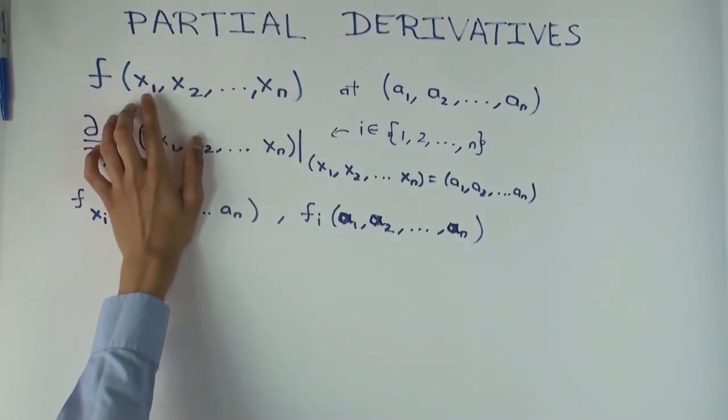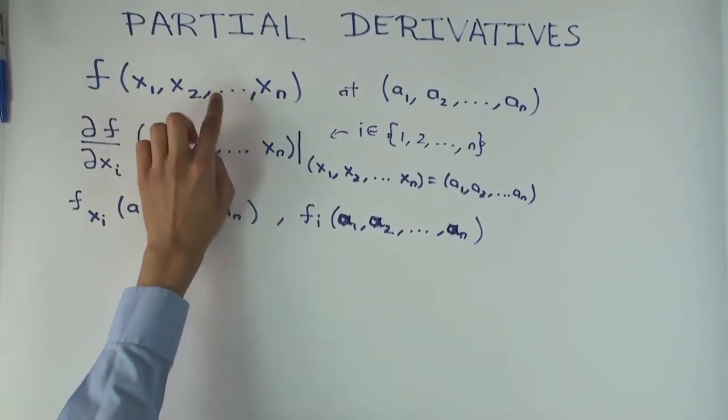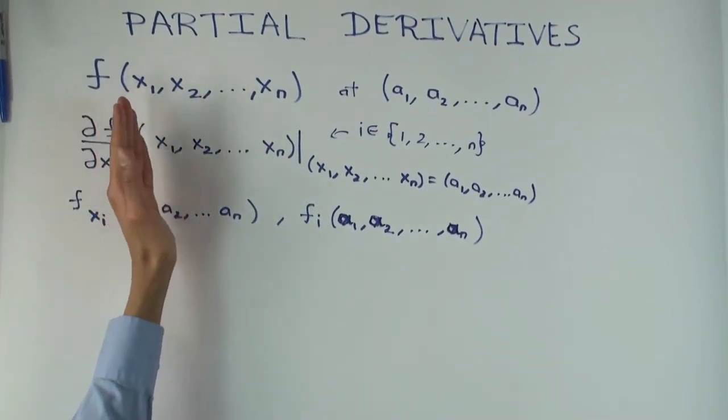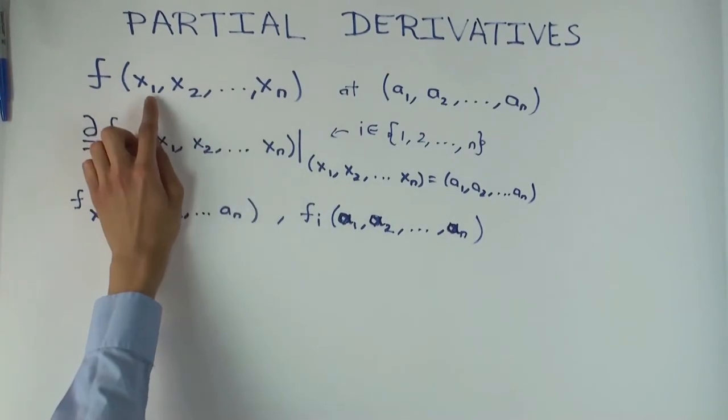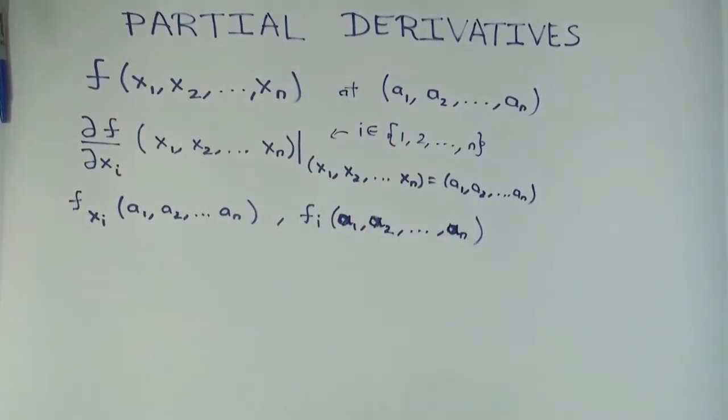So each of the inputs to f, I'm denoting like x1, x2, so on until xn, so I'm distinguishing the inputs based on the subscript. So in the earlier case, when I had a function of two variables,